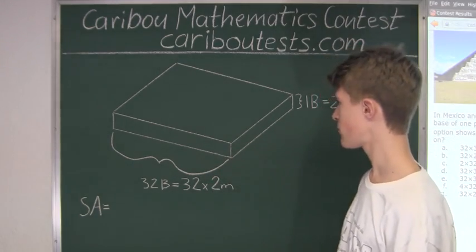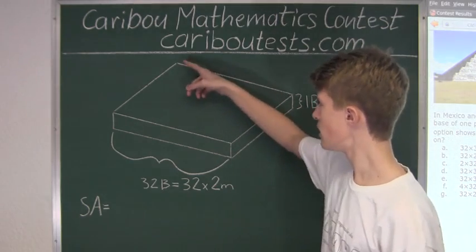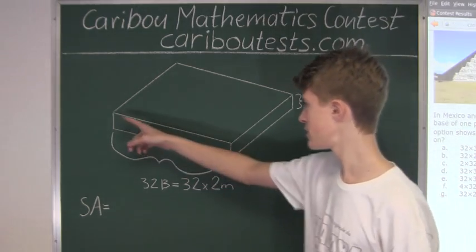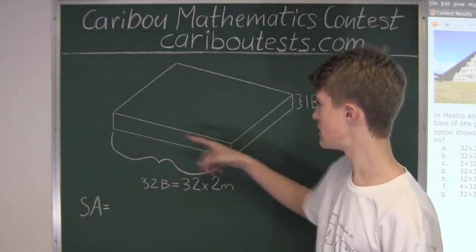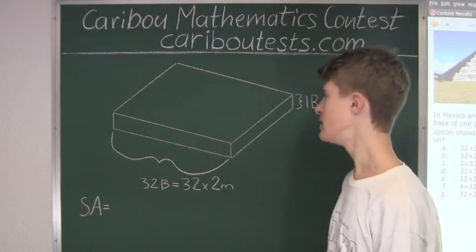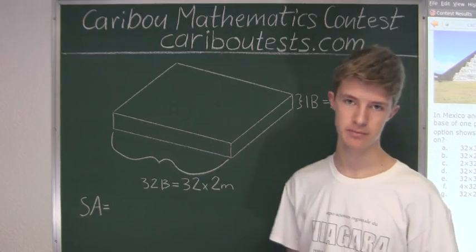So what we will do is first find the surface area of this square base and then we will find the surface area of one of these sides and then multiply that by 4 because the sides have the same dimensions and then add those two surface areas.